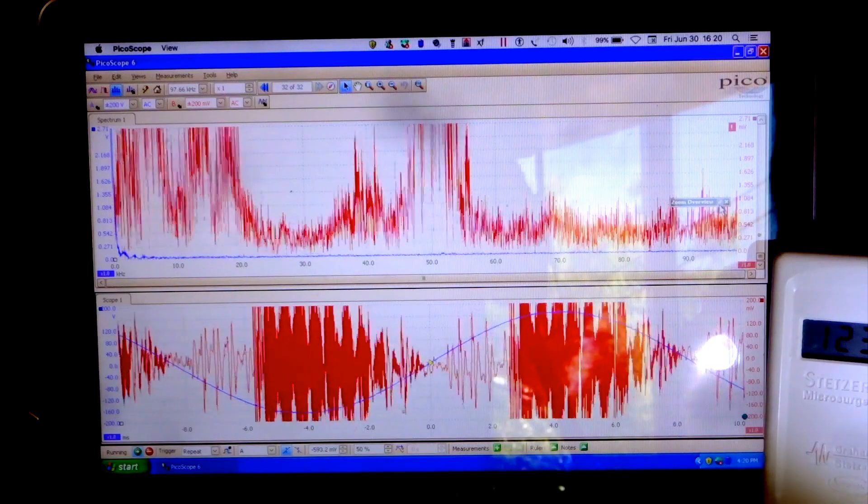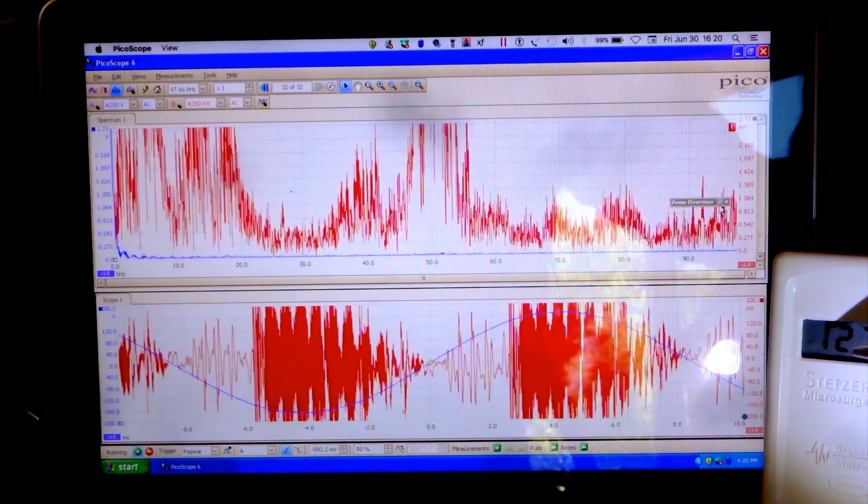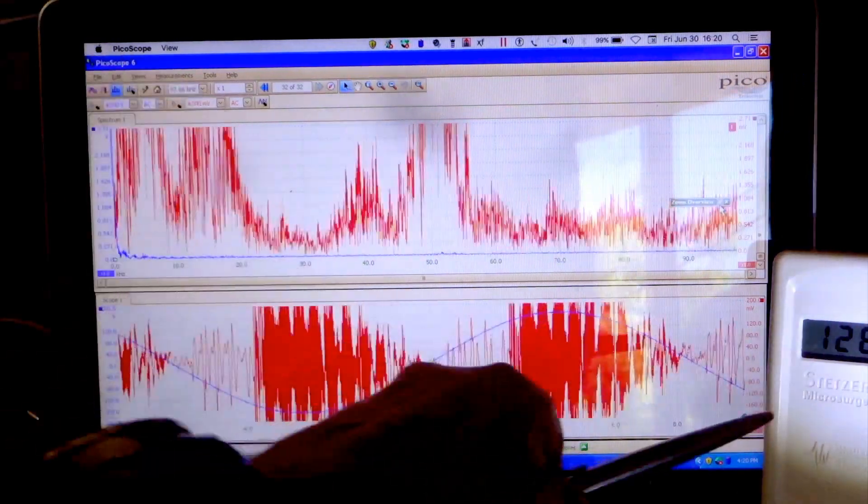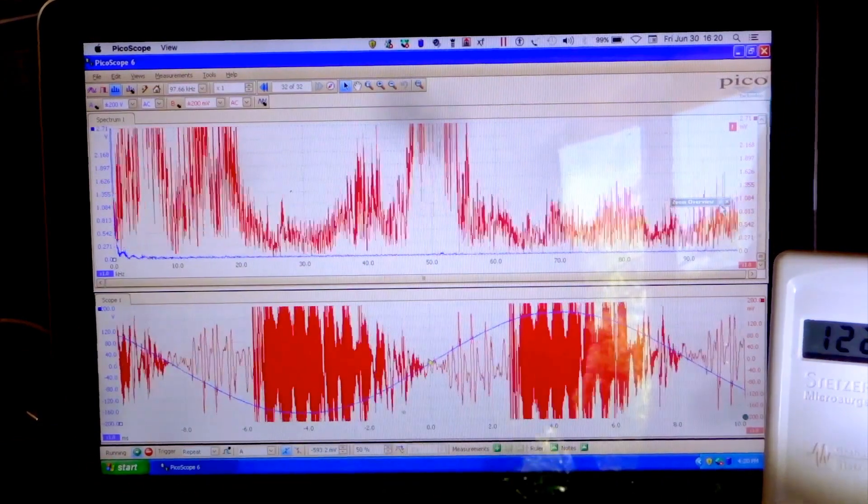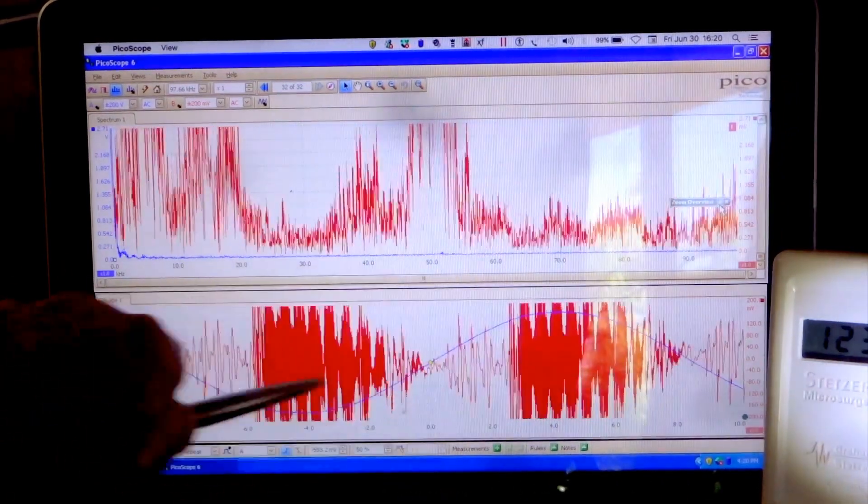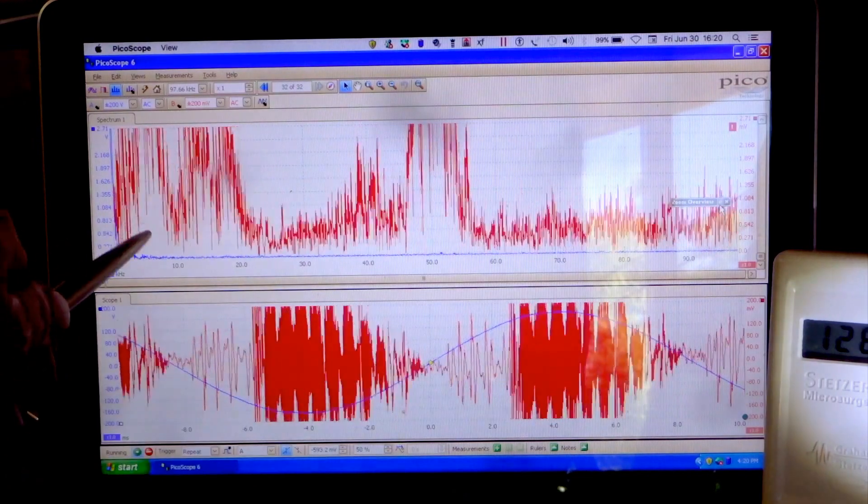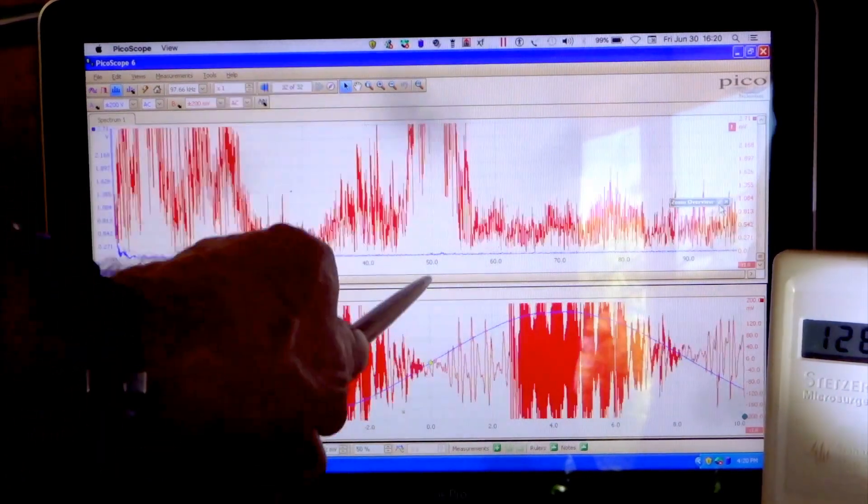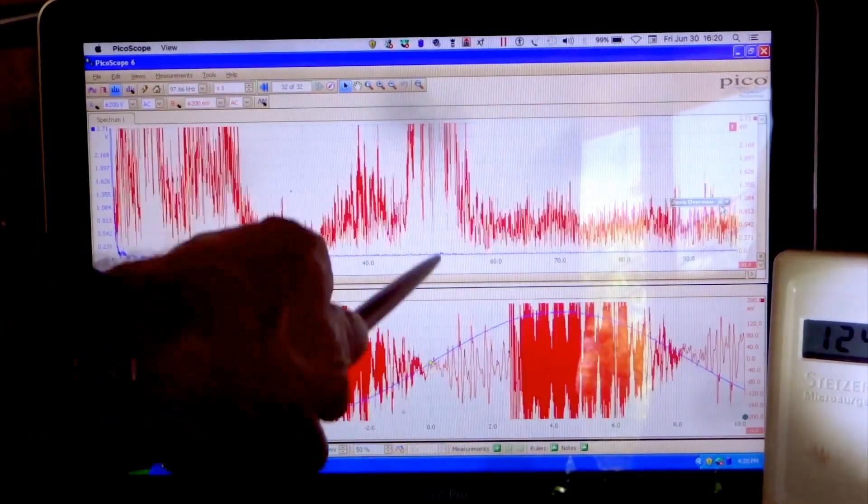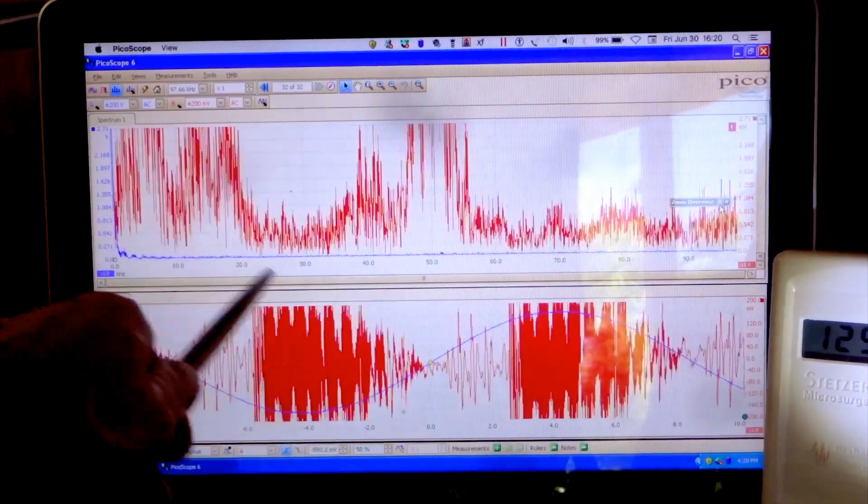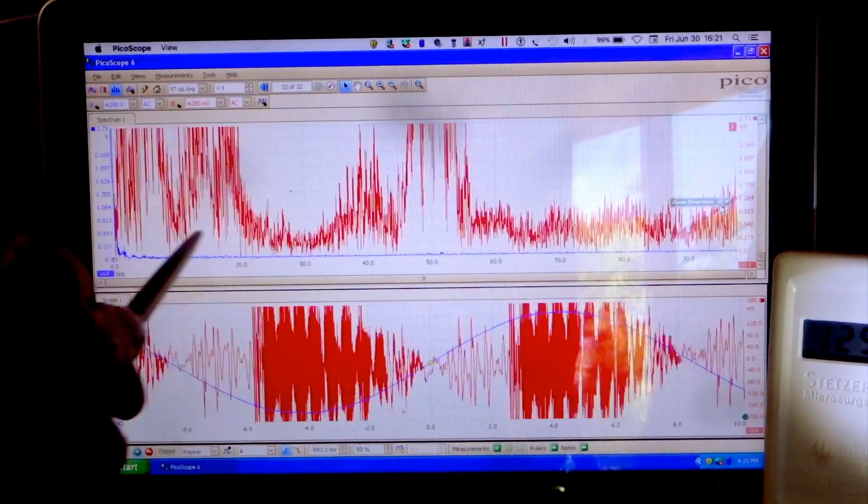Okay, so we can see that the Stetzer meter went up from 130 to 1260, or about 10 times higher. And of course the waveform is just off the chart here. We're seeing a lot of spectrum analysis here at 60 kilohertz and a lot here in the 10 to 20 kilohertz range.